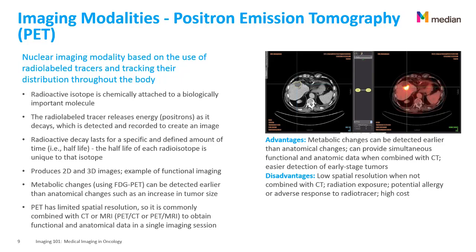PET advantages include that metabolic changes can be detected earlier than anatomical changes. PET can provide simultaneous functional and anatomic data when combined with CT, and it provides easier detection of early-stage tumors. Disadvantages include low spatial resolution when not combined with CT, radiation exposure, potential allergy or adverse response to the radiotracer, and the high cost.